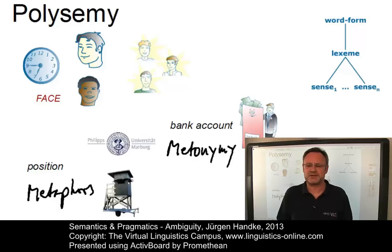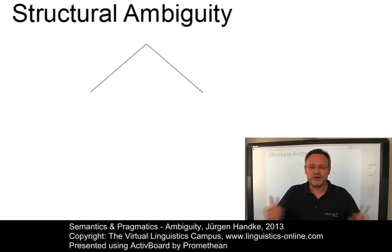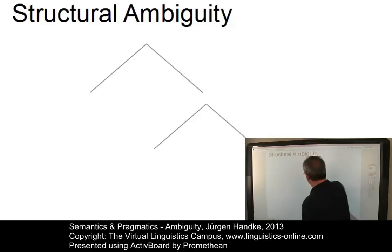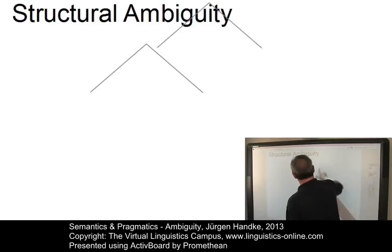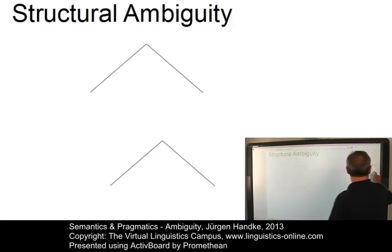While homonymy and polysemy are theoretically clearly defined, in practice the distinction between them is not always easy to make. Historical facts may contradict speakers' intuitions about the relatedness or non-relatedness of senses. Let's now turn our attention to structural ambiguity. Structural ambiguity is basically a question of what goes with what. If you take a simple constituent structure, you can ask where a branch attaches — here, there, or maybe even elsewhere. Constituents can relate to each other in different ways, even though none of the individual items may be ambiguous at all.